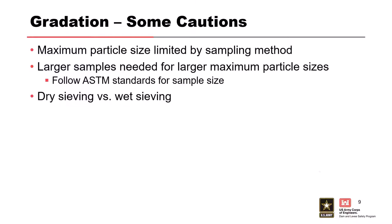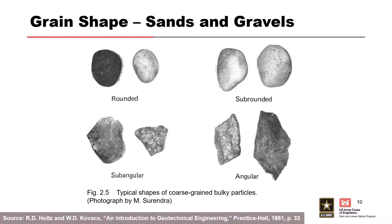Some cautions for gradation testing: the maximum particle size is limited by the sampling method. Don't use a two-inch diameter split spoon if you're dealing with large gravel — it won't yield representative samples. Also, for larger particle sizes, ASTM standards require a lot of material by weight; for very large particles you may need almost a truckload of material. Grain shape — sub-rounded, rounded, sub-angular, angular — also matters, particularly for hydraulic conductivity, as it affects how water flows through the material.